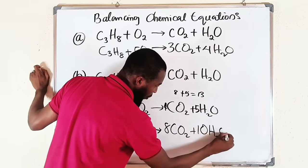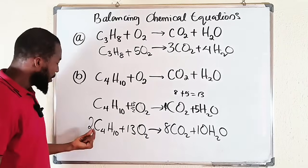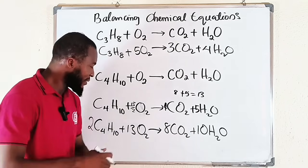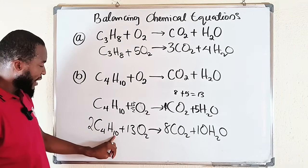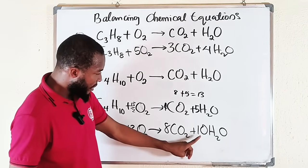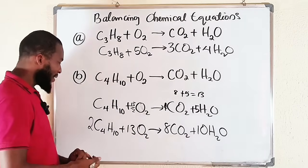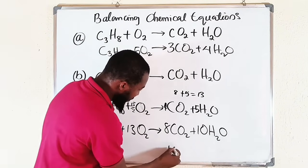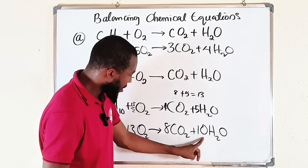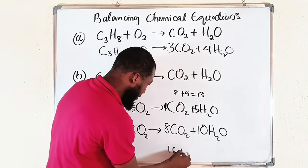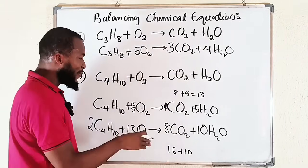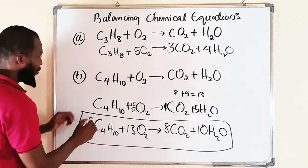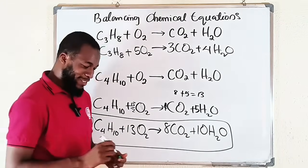Let's cross-check: carbon — 2×4 = 8 on the left, 8 on the right — balanced. Hydrogen — 2×10 = 20 on the left, 10×2 = 20 on the right — balanced. Oxygen — 13×2 = 26 on the left; 8×2 = 16 from CO₂ plus 10 from H₂O gives 26 — balanced. Everything checks out. This is the balanced equation for this reaction — isn't it beautiful!